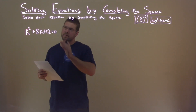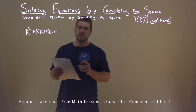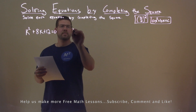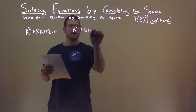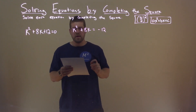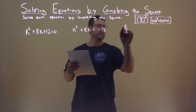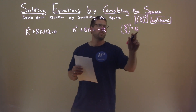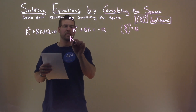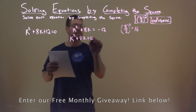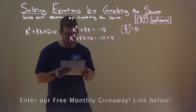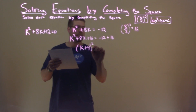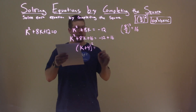We're given this problem right here: K squared plus 8K plus 12 equals 0, and we need to solve this by completing the square. The first thing I'm going to do is subtract 12 from both sides, leaving me with K squared plus 8K equals negative 12. Now let's look at our B value, which is 8. Using our formula: 8 divided by 2, squared, comes out to be 16. So we're going to add 16 to both sides: K squared plus 8K plus 16 equals negative 12 plus 16. The left side is now a perfect square — K plus 4, all squared — and negative 12 plus 16 is a positive 4.